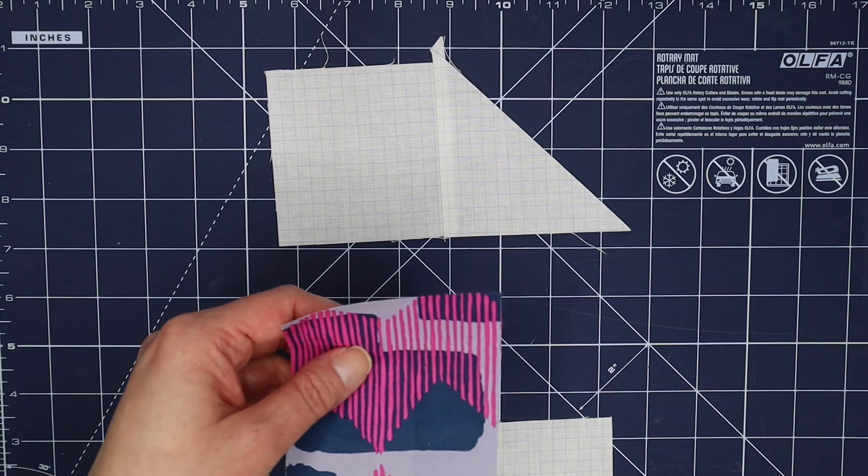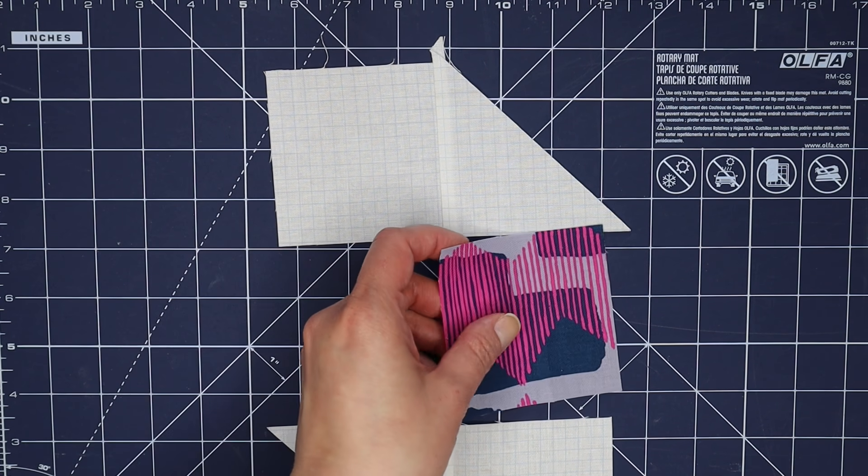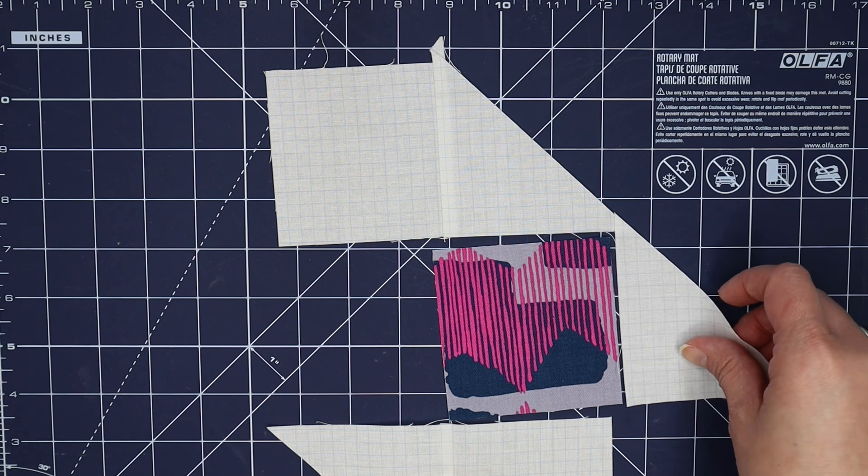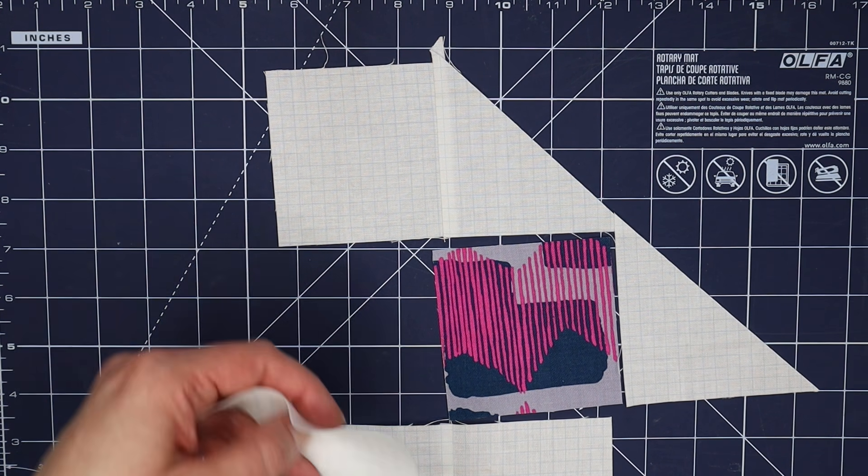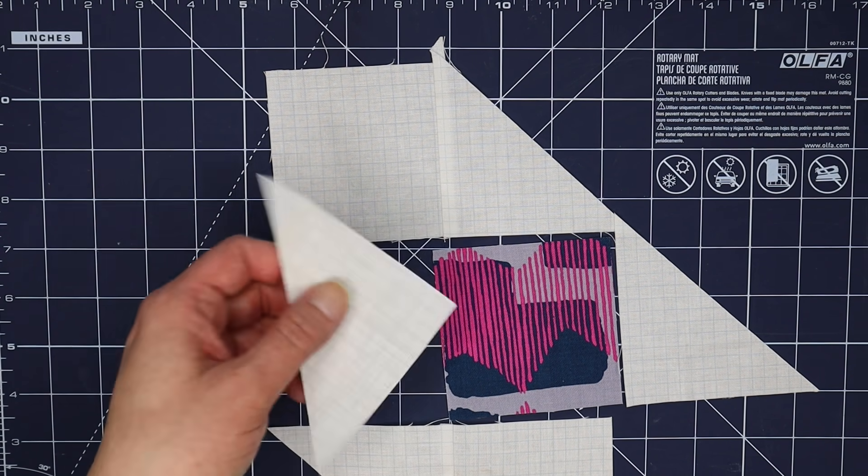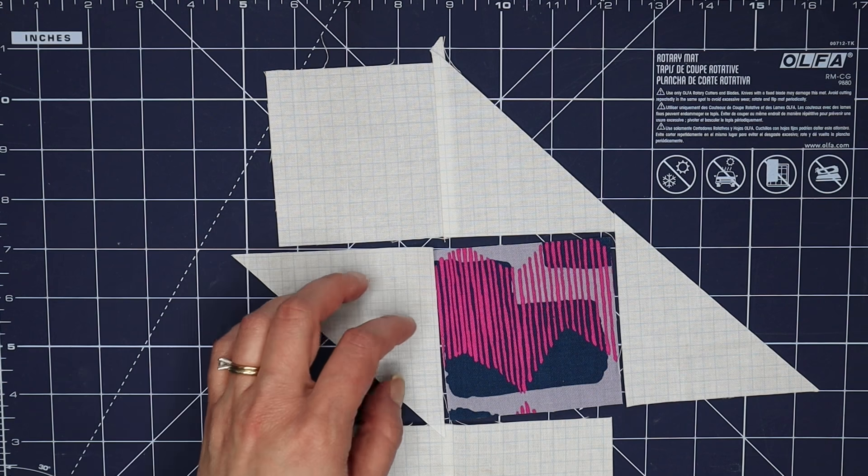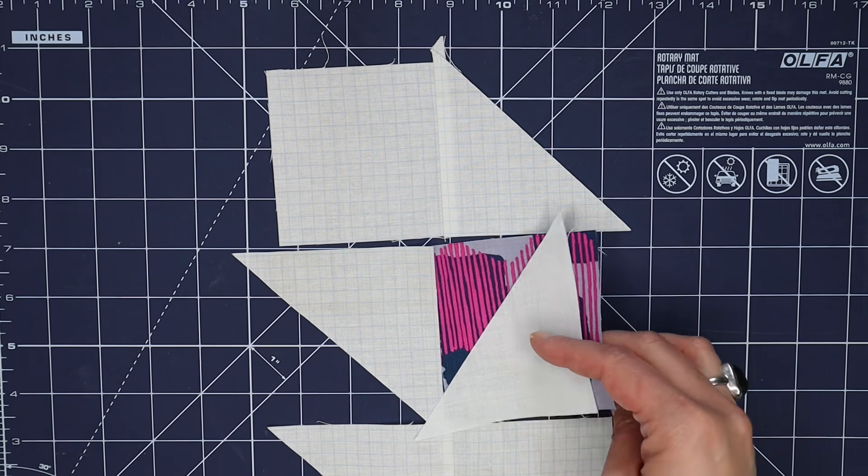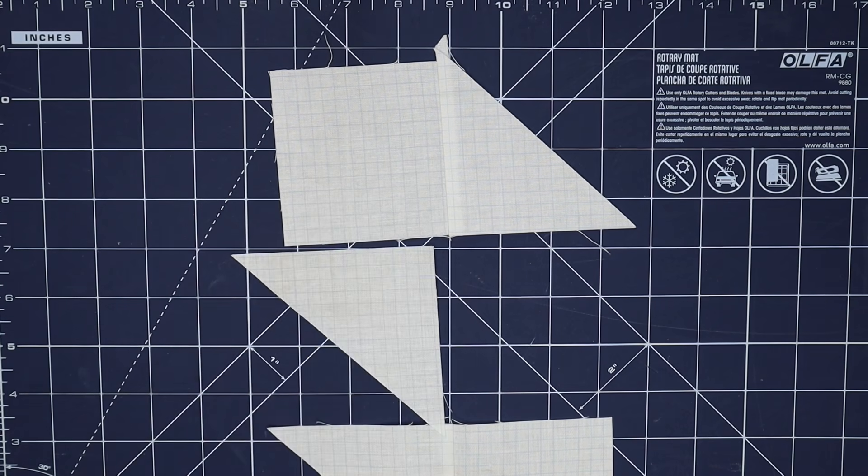The next piece we need to incorporate is this center square and we want to make sure that it's going in the right direction, because this is right but this is wrong, so you have to make sure you're sewing in the right direction. Again I'm going to sew one at a time and I'm pressing all my seams towards the triangles.